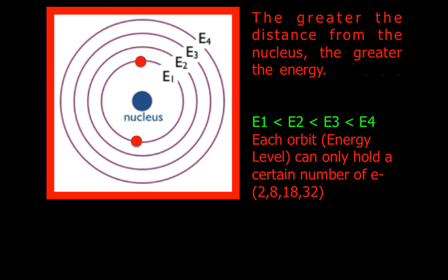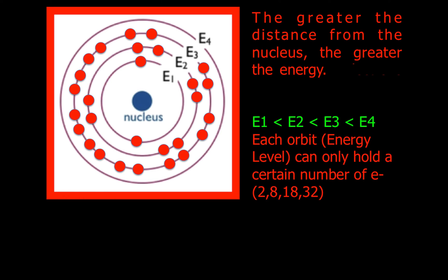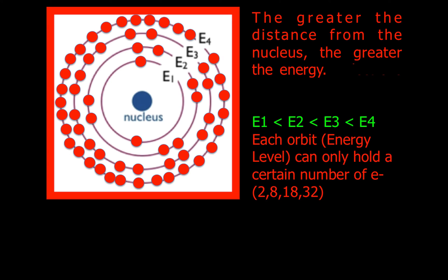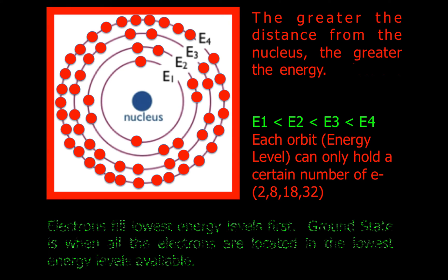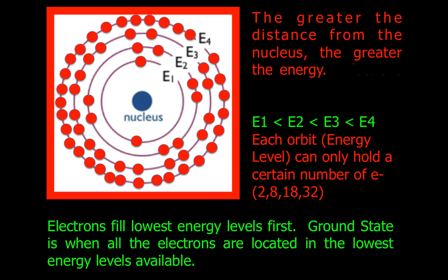The first orbit can hold two, the second can hold eight, the third can hold eighteen, and the fourth can hold thirty-two. Electrons fill the lowest energy levels first. Ground state is when all the electrons are located in the lowest energy levels available.